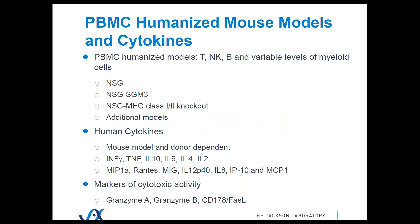So we use a PBMC platform. In our platform, we use a lot of different mouse models: NSG, NSG-SGM3, NSG Double Knockout, and some new experimental models which seem to have increased sensitivity for CRS. Depending on the model, we get T cells, NKs, B cells, and myeloid cell populations in some of our mouse models. For human cytokines — these are all human — they are donor-dependent and also mouse-model-dependent.